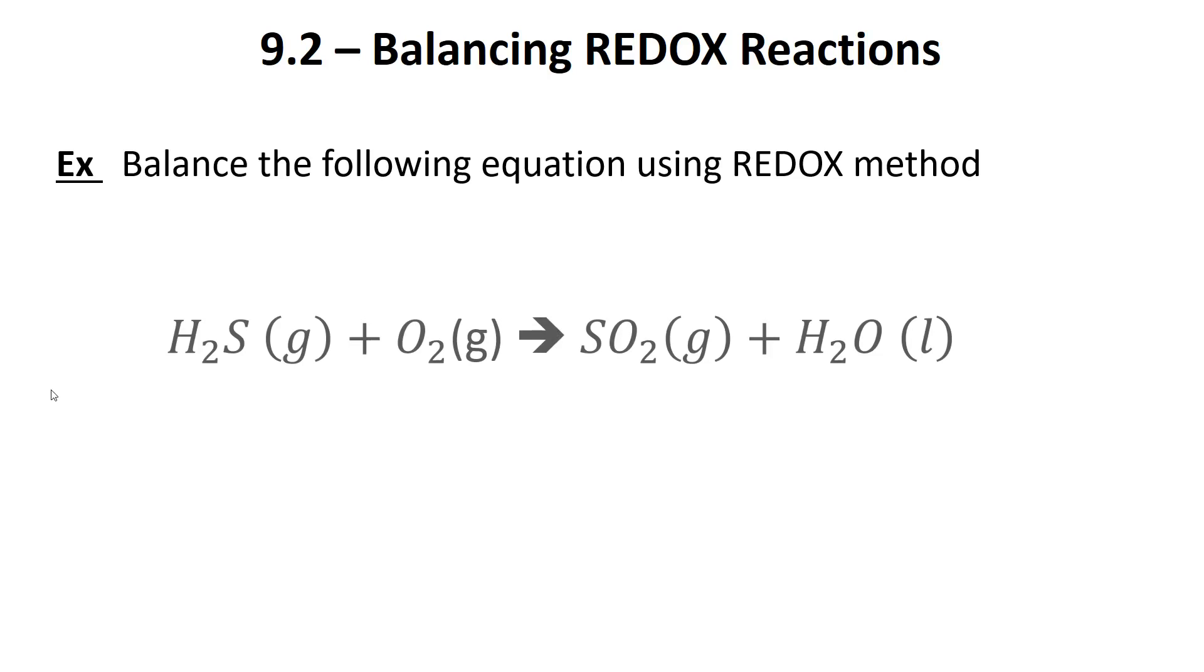We're going to balance this using the redox method. I've written H2O in here for our equation. This is the full equation, it's not balanced. First thing we need to do is assign oxidation numbers. I'm going to start with oxygen because it's in its gaseous elemental state, so it has an oxidation number of zero.